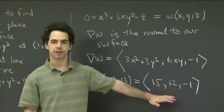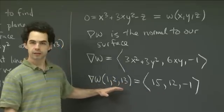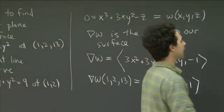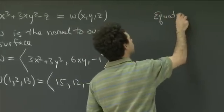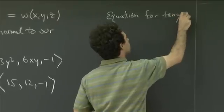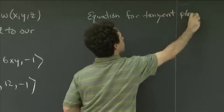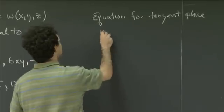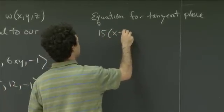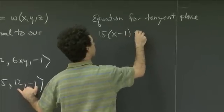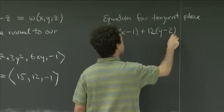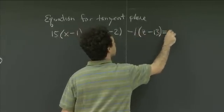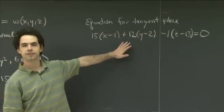So this is the gradient vector at our point (1, 2, 13). Now we have a point and we have the normal vector (15, 12, -1). So that gives us the equation for the tangent plane right off. The equation for the tangent plane, I just dot the normal vector with the vector connecting our point to the point (x, y, z). So that gives us 15 times (x minus 1) plus 12 times (y minus 2) minus 1 times (z minus 13) equals 0. So in point normal form, this is the equation for that plane.